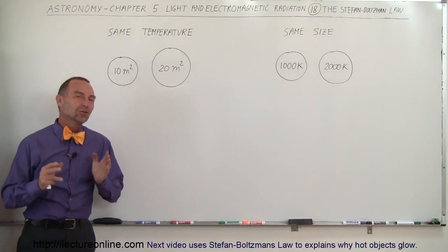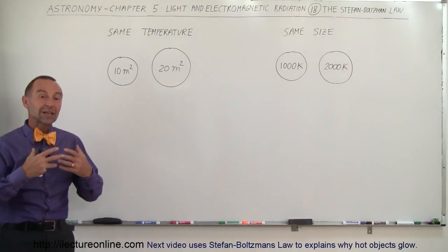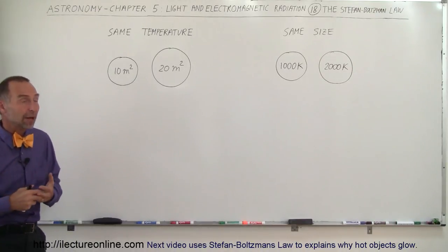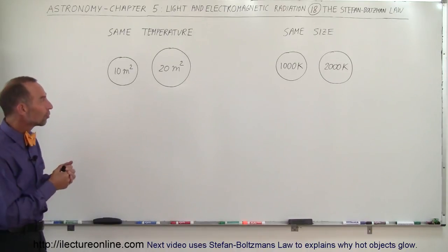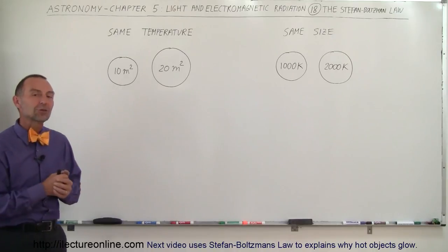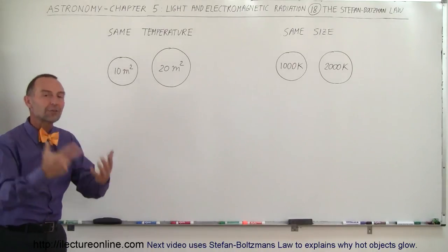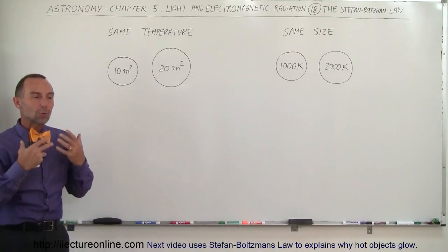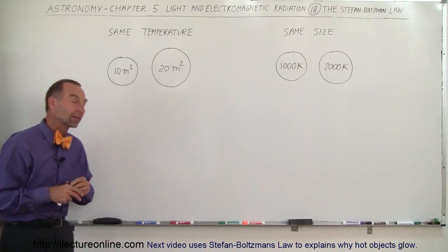Welcome to ElectronLine. Just like Wien found the relationship between the temperature of an object and the type of radiation coming from that object, Stefan and Boltzmann also researched the relationship between temperature and radiation coming from an object, but more in terms of the intensity.